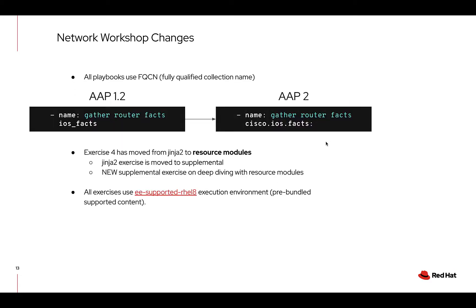The network workshop, which I'm in charge of, has moved to using fully qualified collection names. So instead of like 'ios_facts' as an example, we use 'cisco.ios.facts'. This allows us to use that collection versus the old built-in batteries-included model with Ansible 2.9. I've also deprecated a Jinja exercise — I did update it for AAP2, but it's moved to supplemental exercises. Now we have a resource module exercise that we default to in training, plus a new supplemental exercise for more deep diving on resource modules. We also only use the EE-supported RHEL 8 on the network workshop, so everything's included.